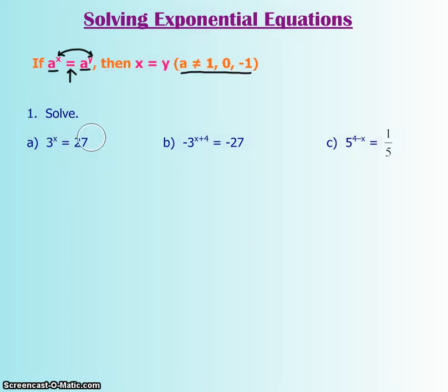Let's try it out. Number one, we're going to solve. We have 3 to the power of x equals 27. So we want the same base. And since this one has a base of 3, I'm going to try to make this one a base of 3 as well. Now 3 to the power of what is going to give me 27? 3 to the power of 3 gives me 27. So now they have the same base and I can say that their exponents must be the same.